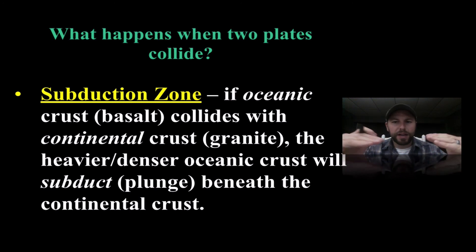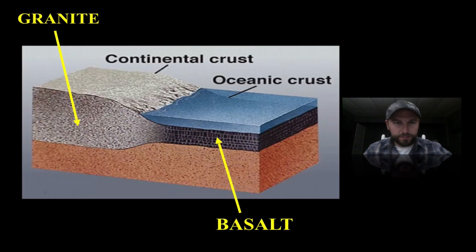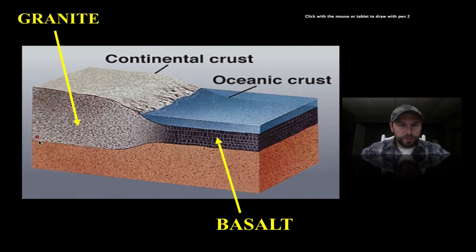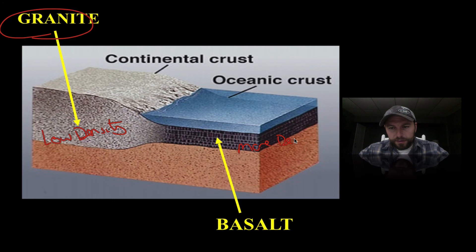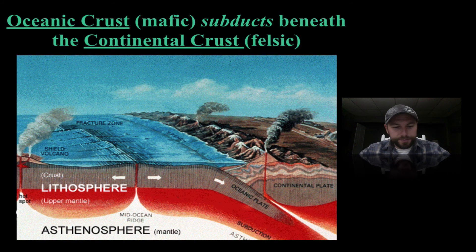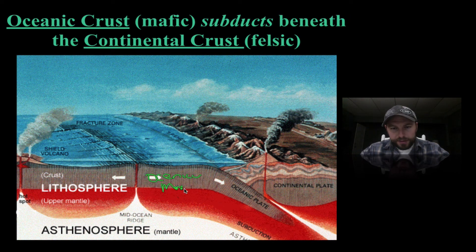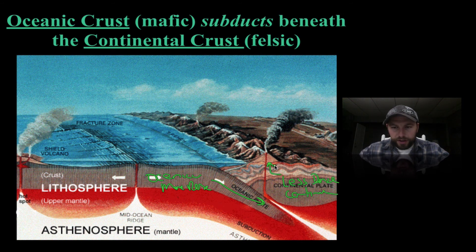If we have oceanic crust, which is more dense, hitting continental crust, the oceanic will subduct — go down underneath — because it's more dense. If we have continental colliding with continental, they'll hit and move upwards. Continental crust is made up primarily of granite, which has a low density, while basaltic oceanic crust is more dense. So the oceanic crust subducts underneath the less dense continental crust, which gets driven upwards.